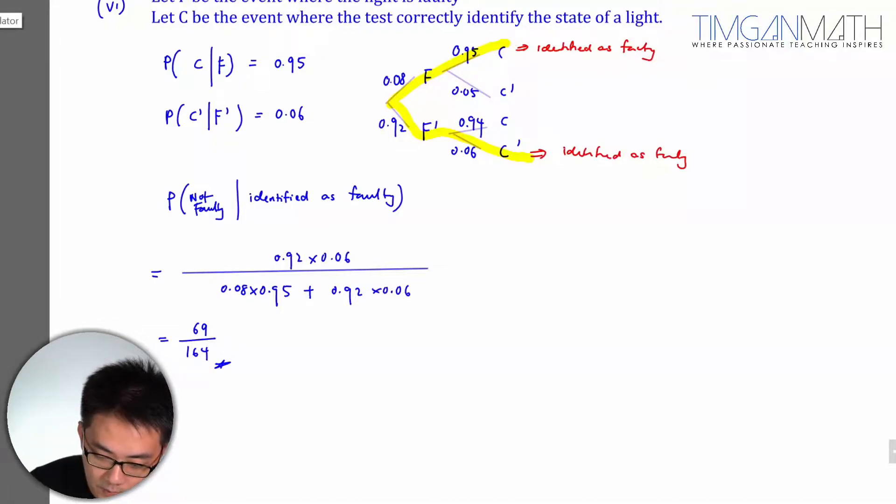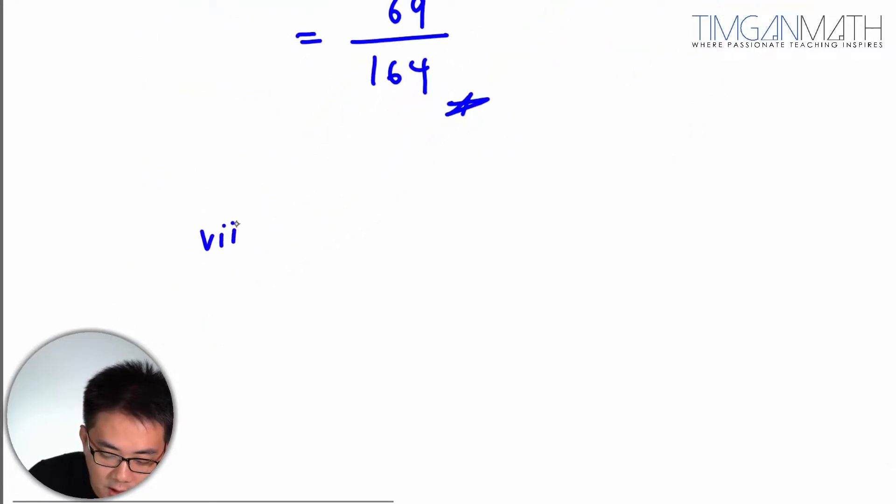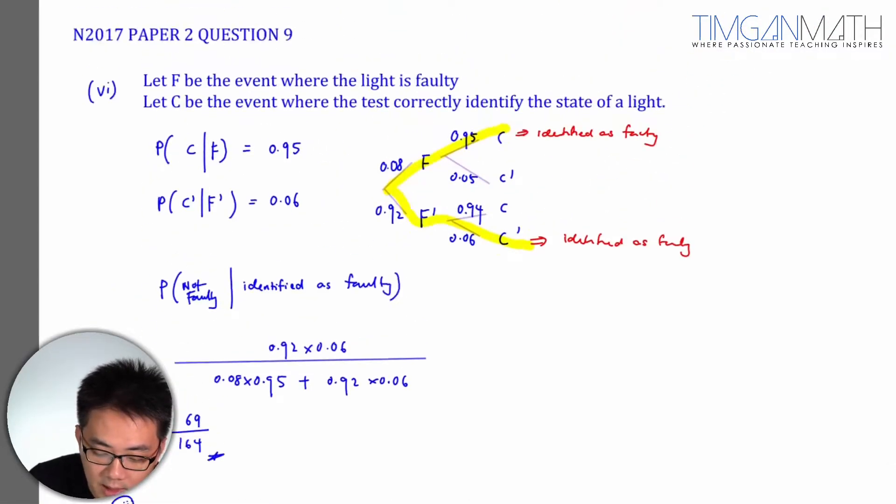Let's look at part 7. So 7 would say, identify if the test correctly identifies the state of the light.